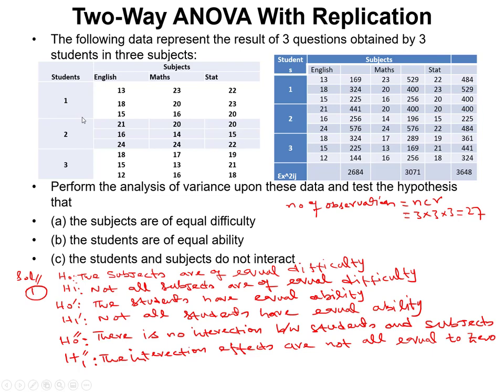Similarly, students are mentioned in the rows, so the second null hypothesis is that students have equal ability across all courses. The alternative is that not all students have equal ability. The third hypothesis — which makes this a two-way ANOVA with interaction — is that there is no interaction between students and subjects. In two-way ANOVA without replication, we would totally ignore this third analysis.